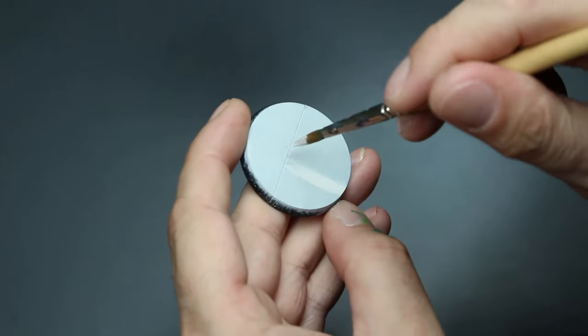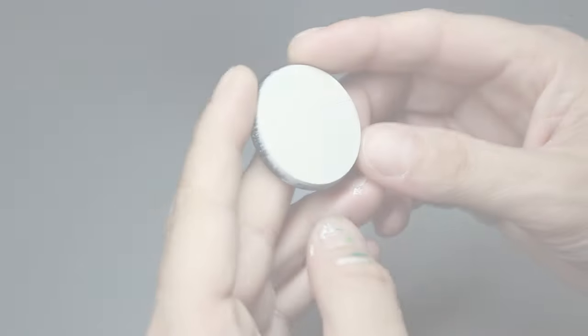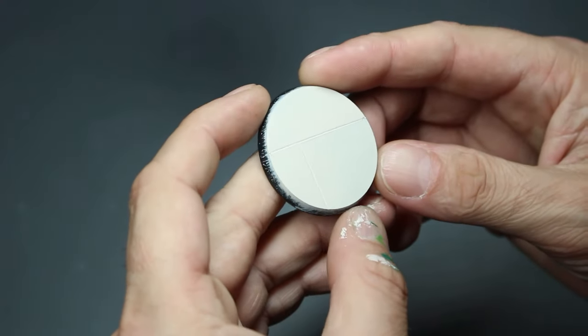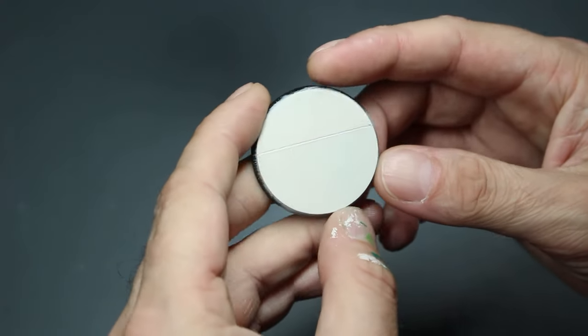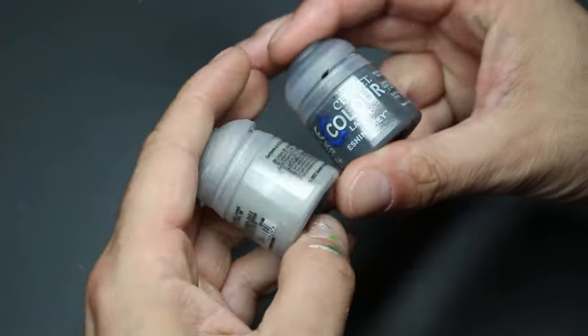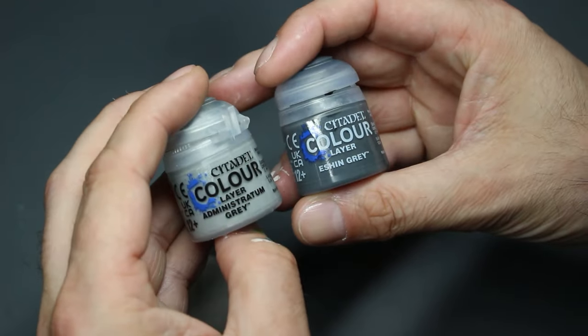That's Pallid Witch Flesh, and again, keep it very, very thin. And you probably want about three layers, three coats, just to get a really nice smooth finish.